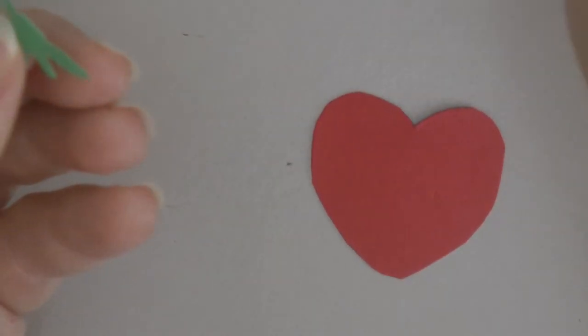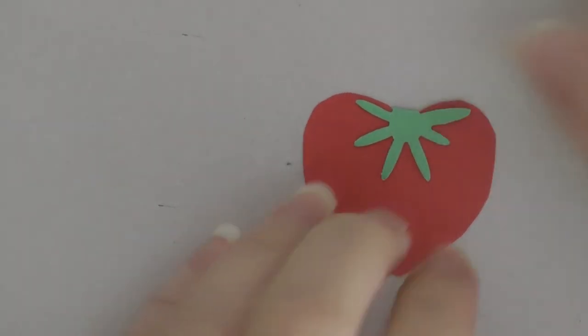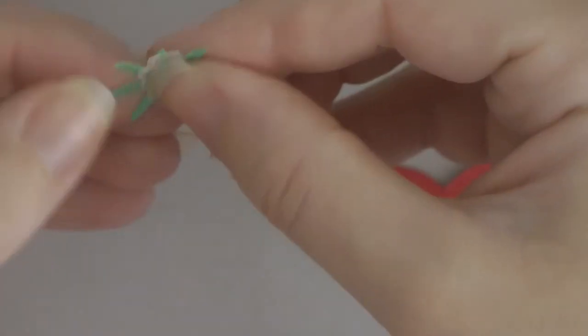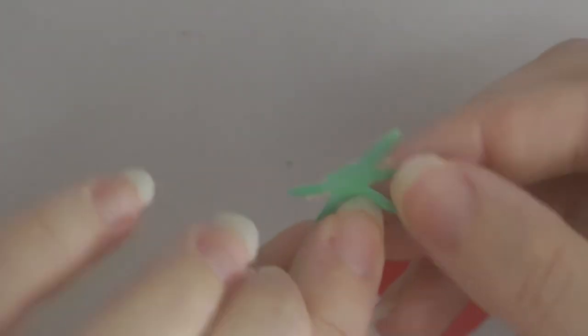So again, check out her blog post if you want to see the way she did it. I am going to do it with fewer rays on my starburst. And then apply a little adhesive. For the video, I am just using a little double-sided adhesive. I would probably use glue if I were doing this for a card because as you can see,